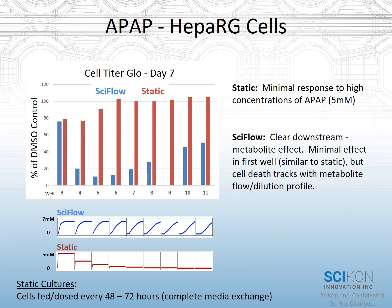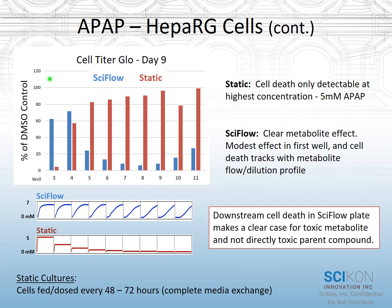This was a seven- and nine-day study. Looking at the data on day nine — in the static condition, we now see a very potent effect with acetaminophen based on a 5 mM dose: almost no viable cells left, diluting out across the plate with not much effect at the downstream end. To contrast that with SciFlow, we again see a modest effect at the highest acetaminophen concentrations, but then a much more pronounced decrease in ATP and cell viability in the downstream wells where metabolites of acetaminophen are flowing, accumulating, and mediating their effects.